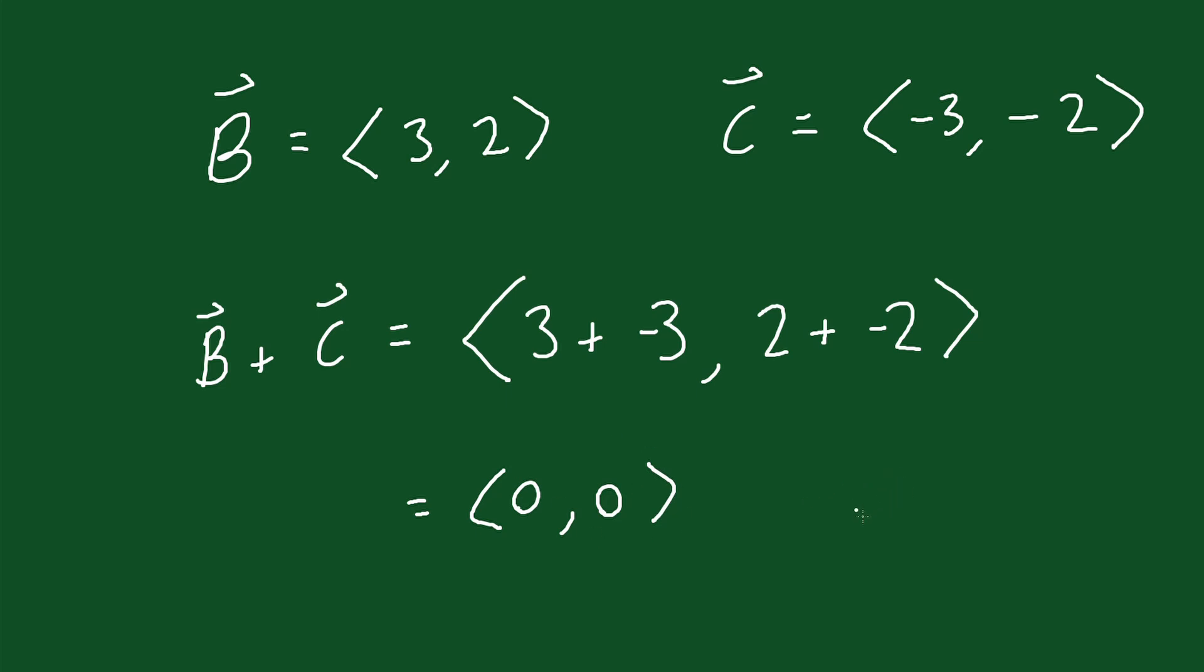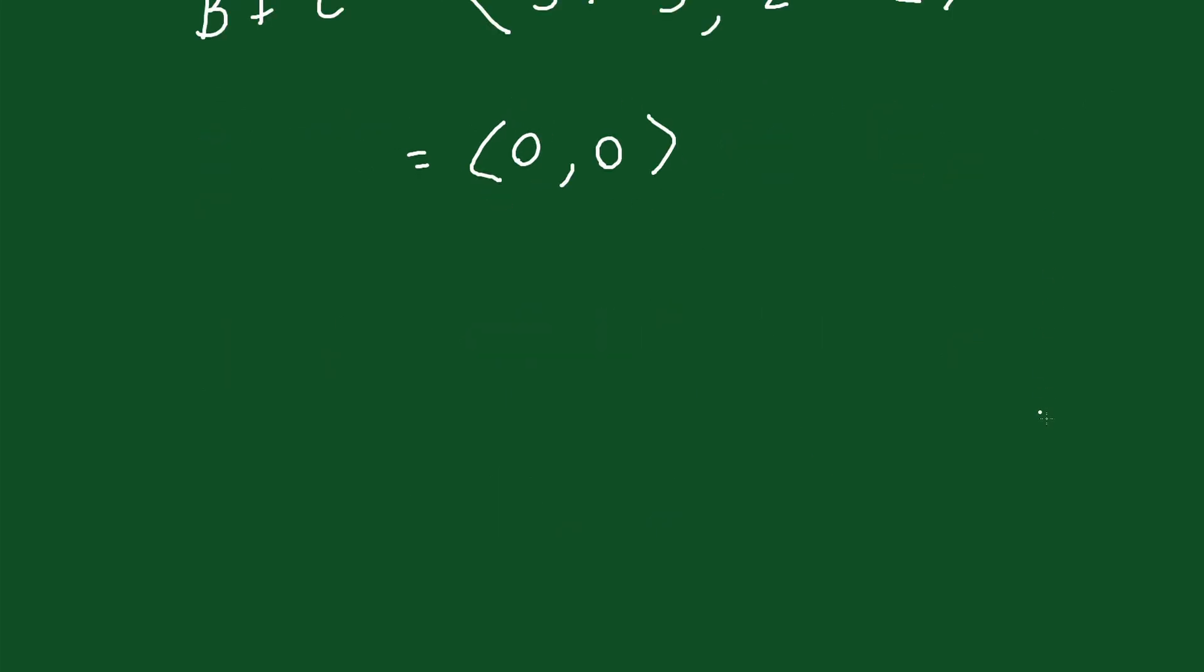All right, but a way to think about this visually is to actually sketch out each of these two vectors. So vector B looks something like this: it moves 3 to the right and up 2, so it's going to look something like this. If you add vector C to that, vector C goes 3 to the left and down 2, so vector C would look something like this. That's your vector C. And when you add them tip to tail, you end up being at the same spot that you started at, and so the resultant vector you get is really just a point.